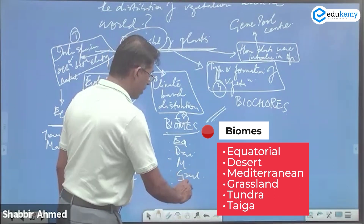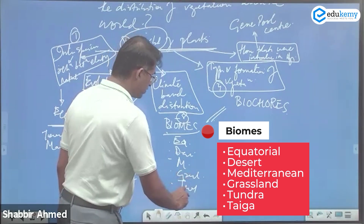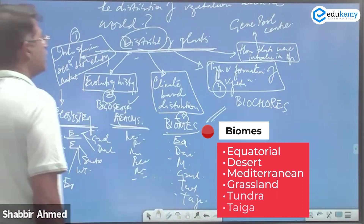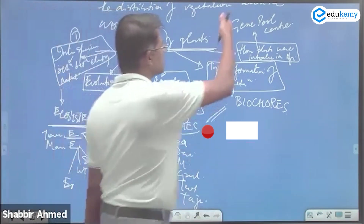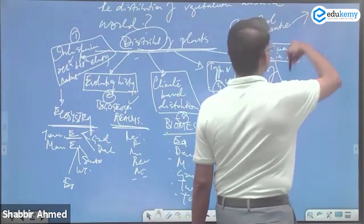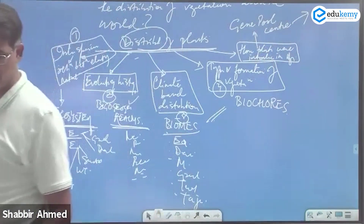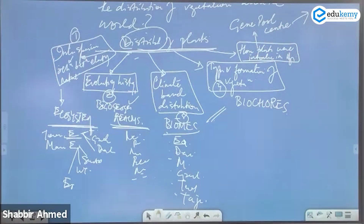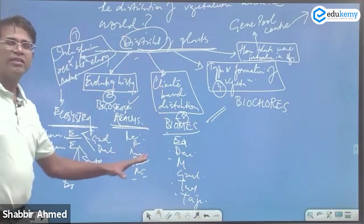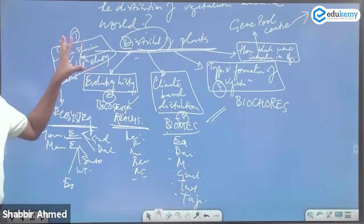Biomes include equatorial biomes, desert biomes, Mediterranean biomes, grassland biomes, tundra biomes, and taiga biomes. Gene pool centers — you know the eight centers: the Mexican, Ethiopian, Indic, and Chinese ones, given by Nikolai Vavilov. These are the easiest ones to remember.